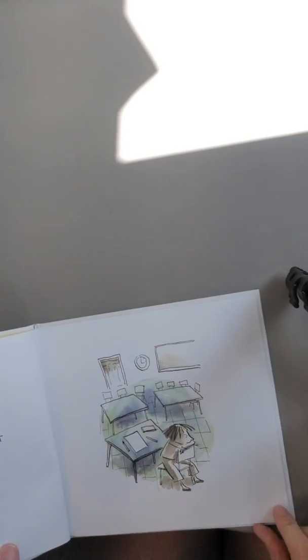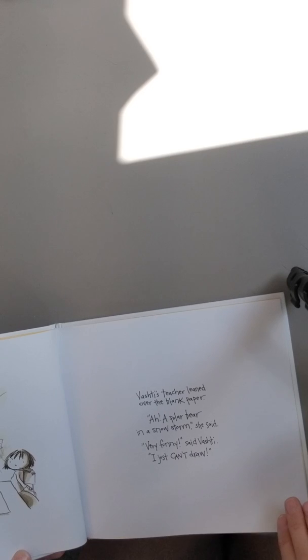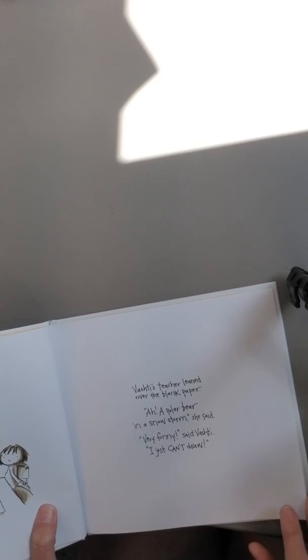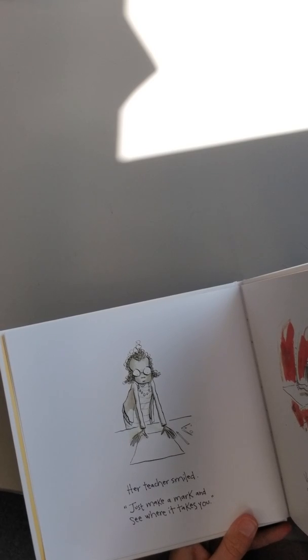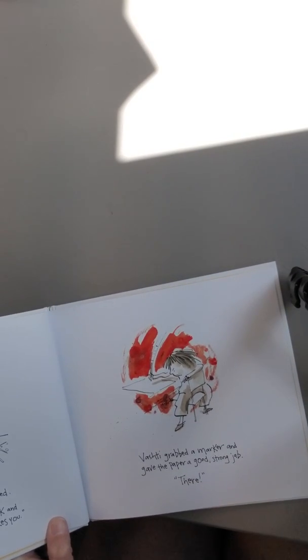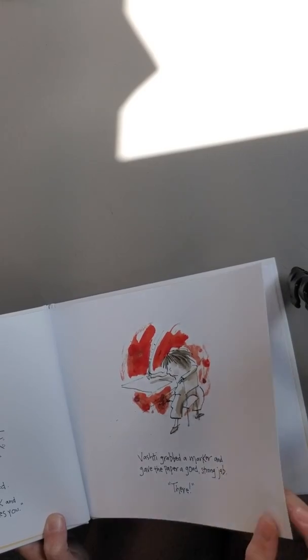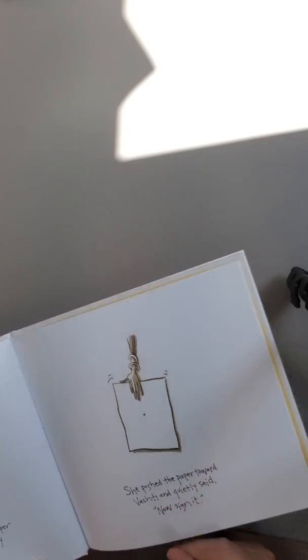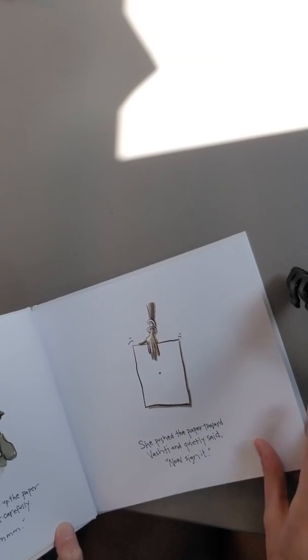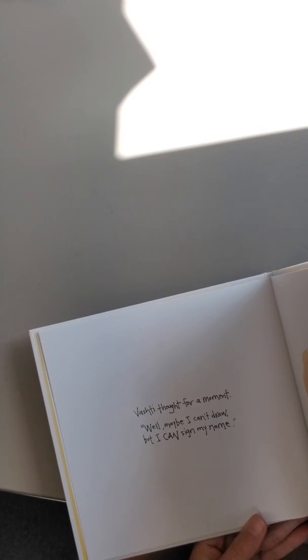Art class was over, but Vashti sat glued to her chair. Her paper was empty. Vashti's teacher leaned over the blank paper. Ah, polar bear in a snowstorm, she said. Very funny, said Vashti. I just can't draw. Her teacher smiled. Just make a mark and see where it takes you. Vashti grabbed a marker and gave the paper a good strong jab. There. Her teacher picked up the paper and studied it carefully. Hmm. She pushed the paper toward Vashti and quietly said, now sign it. Vashti thought for a moment. Well, maybe I can't draw, but I can sign my name.